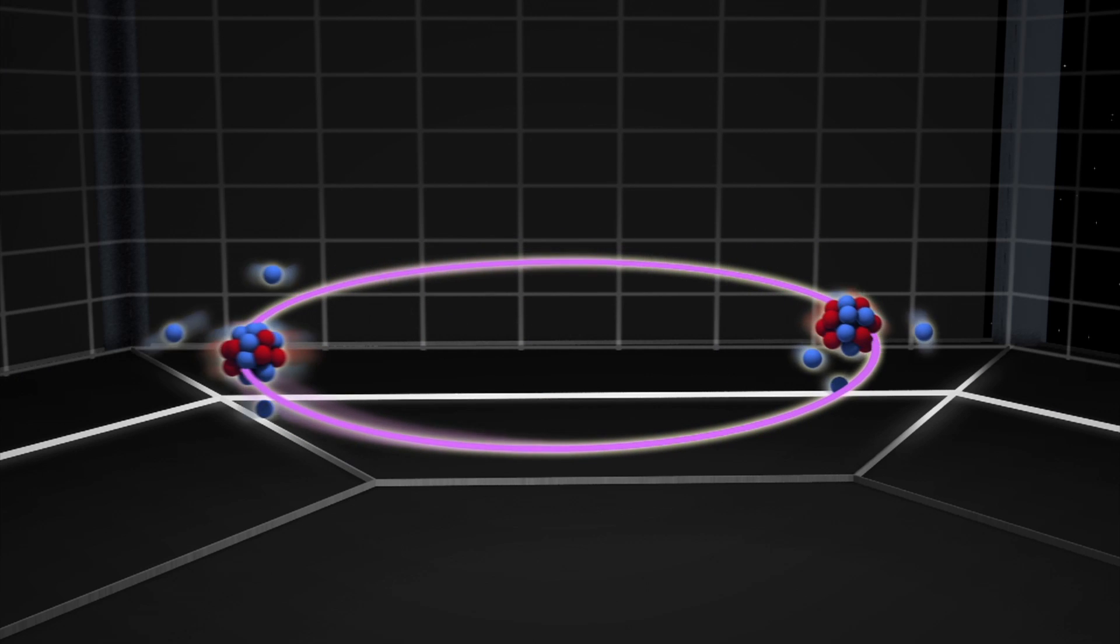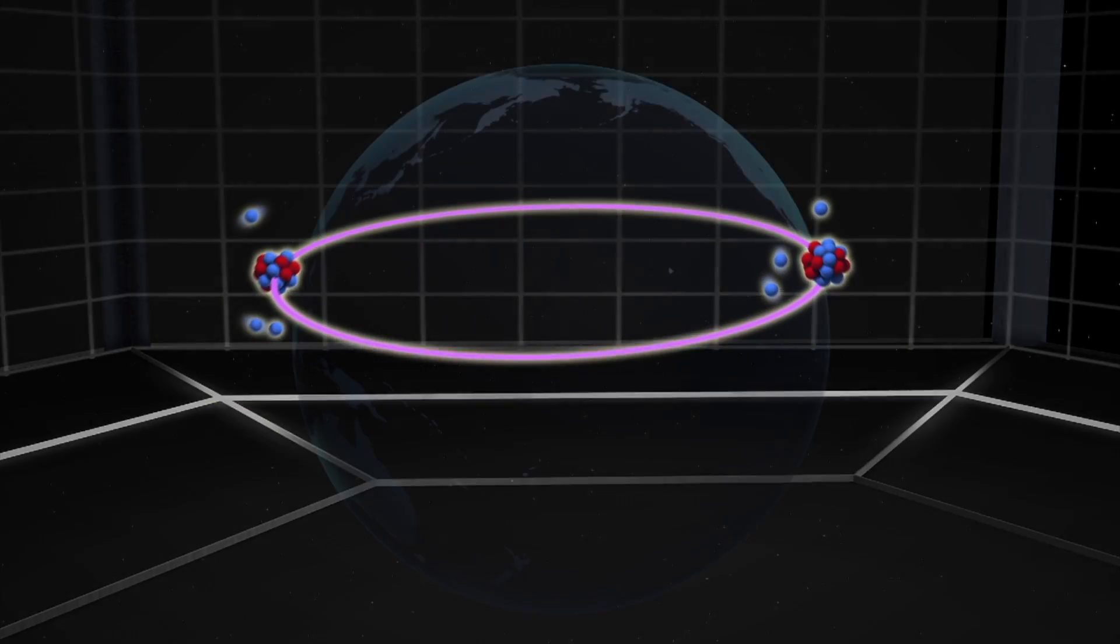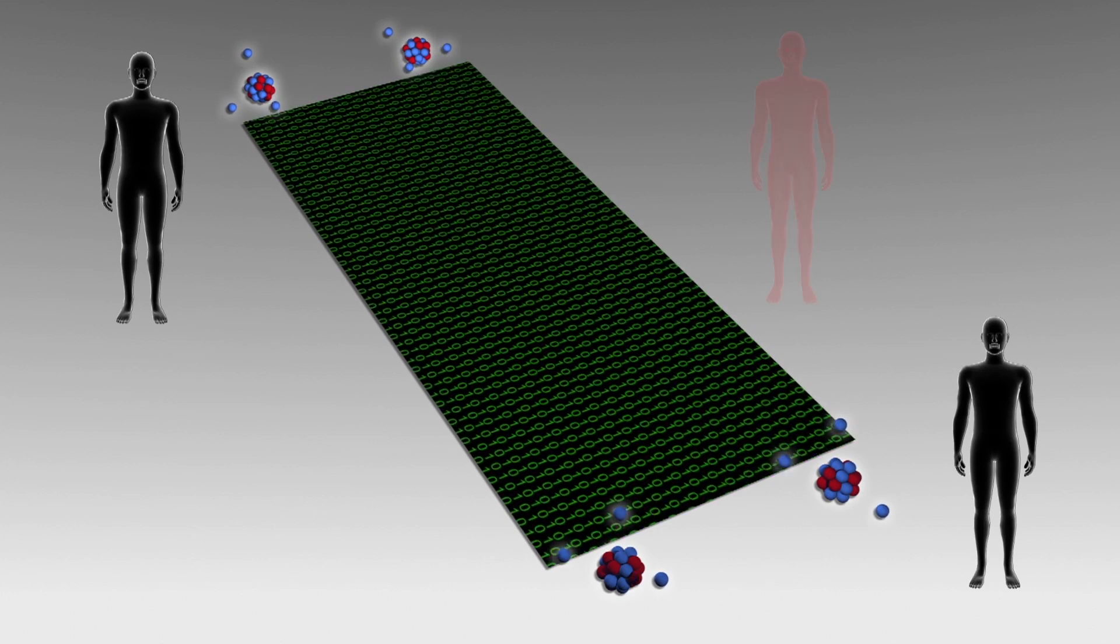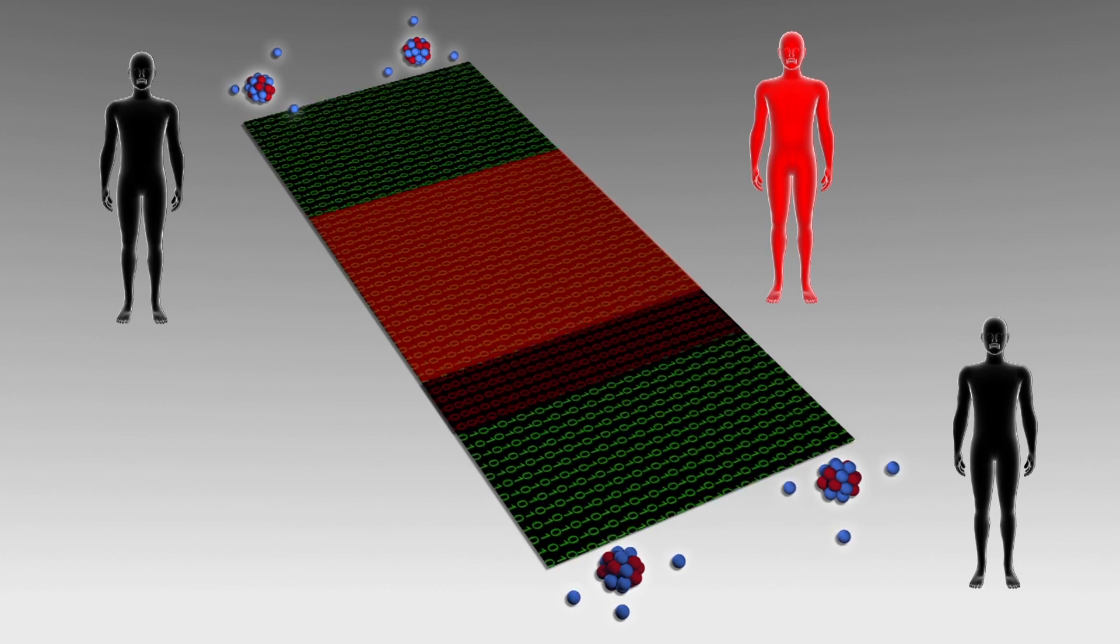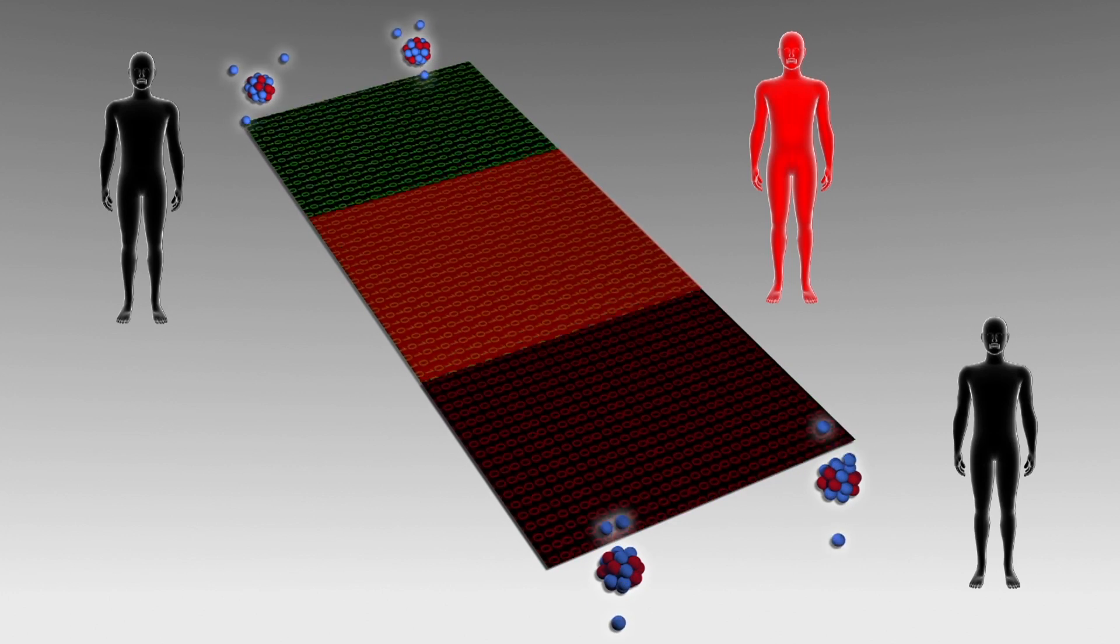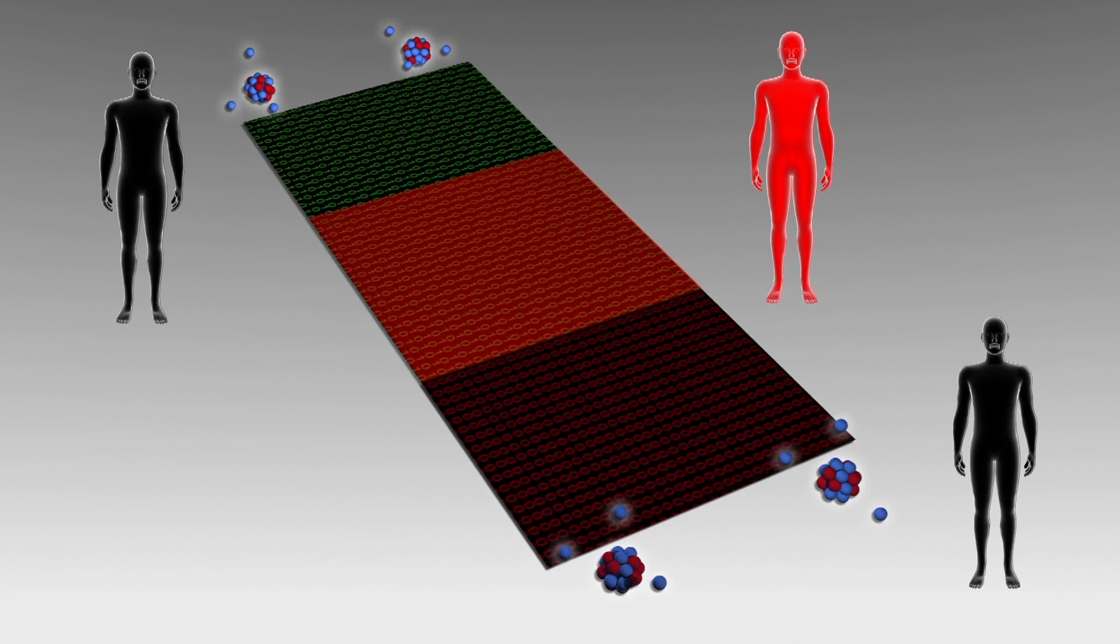The photons remain engaged even when they are separated by great distances. Quantum communication could greatly enhance security, as any interception of the information will alter the state of the photons, giving away the eavesdropper.